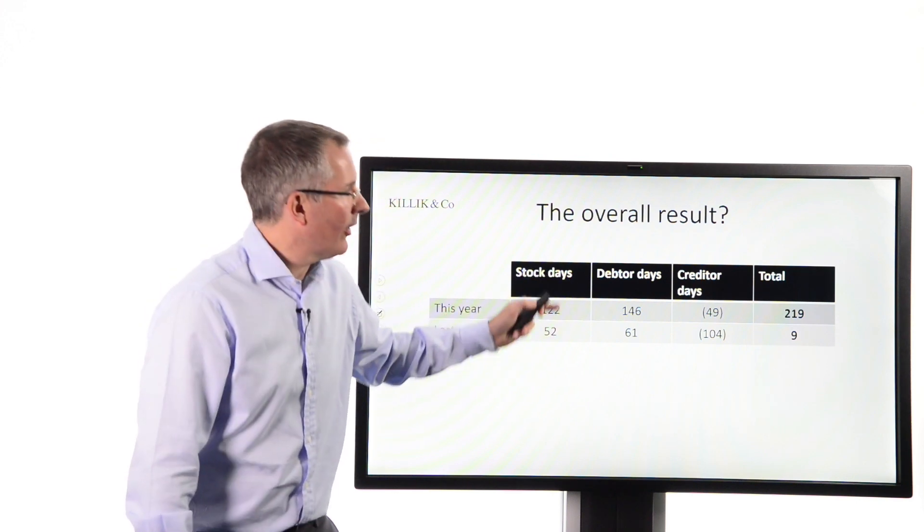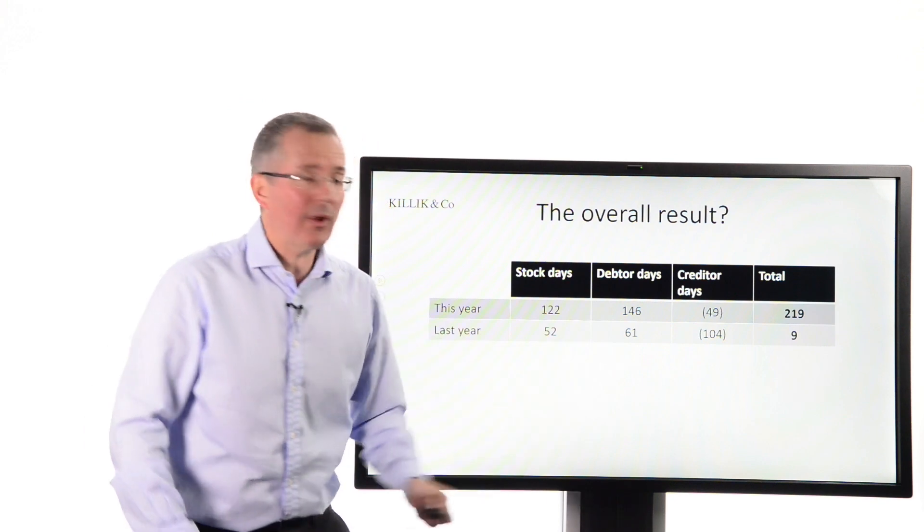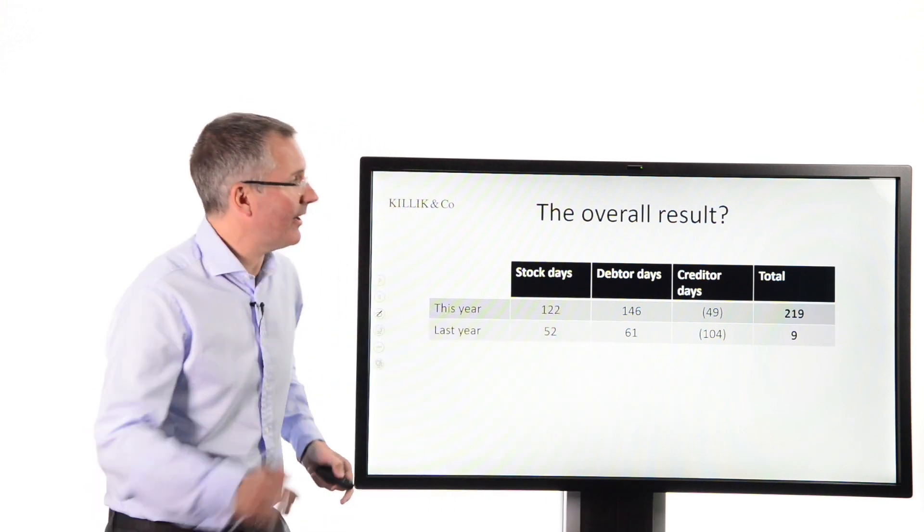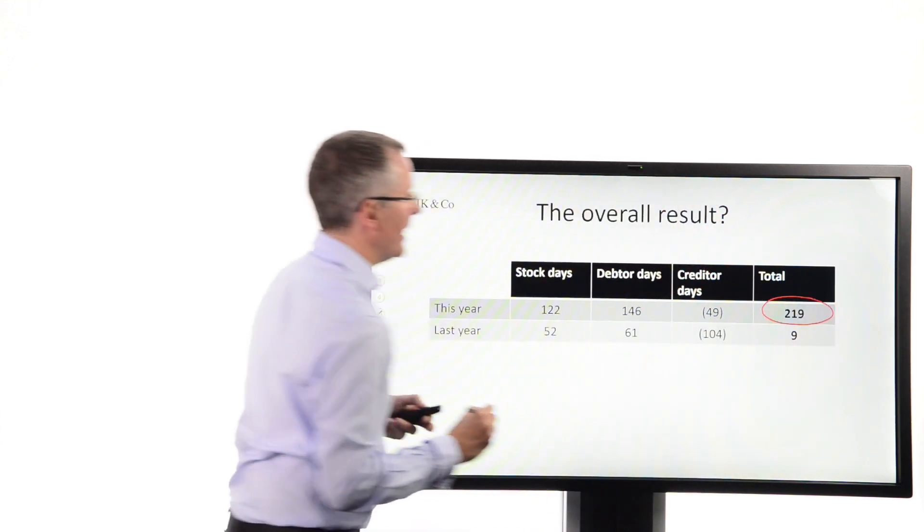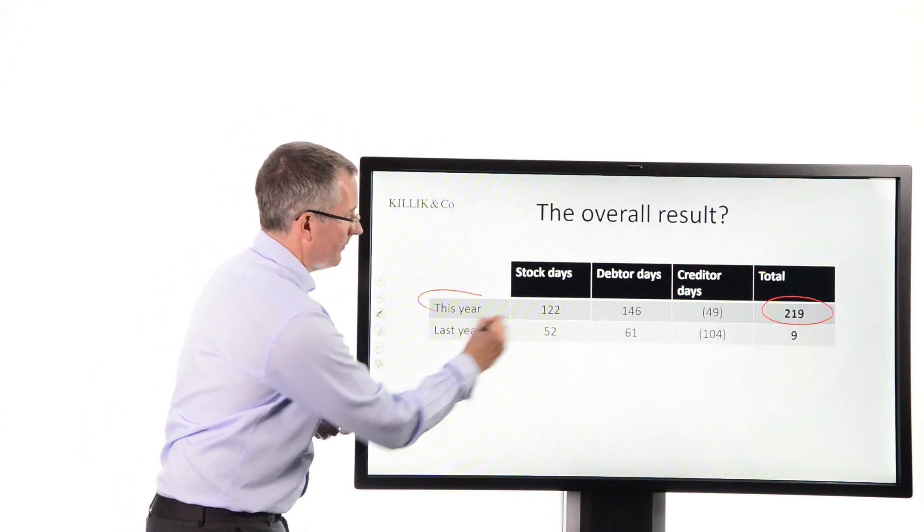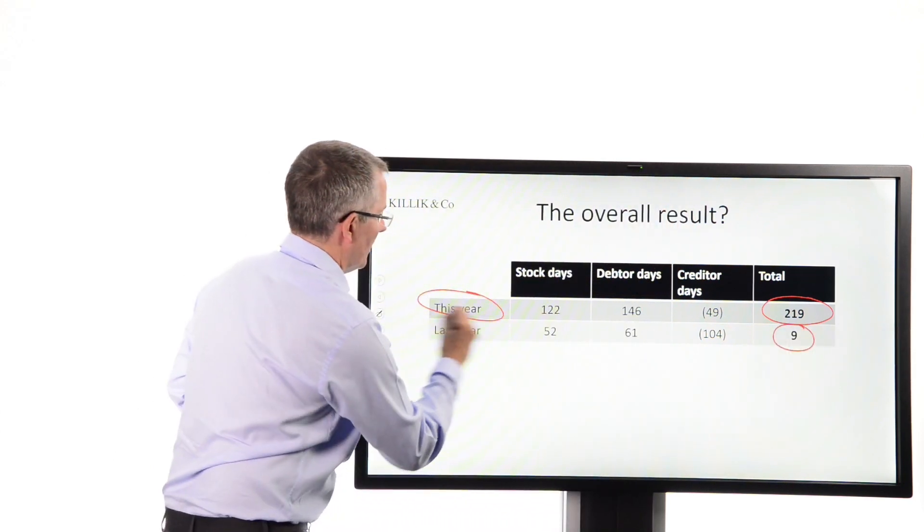Stock days, debtor days, and creditor days. So what I've done is I've added the stock and the receivable days together, deducted creditor days, to give a working capital cycle of 219 days this year versus only nine last year. And you do not want a long working capital cycle. You don't want to see a business where that is stretching and stretching and stretching.